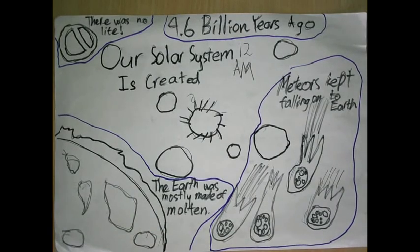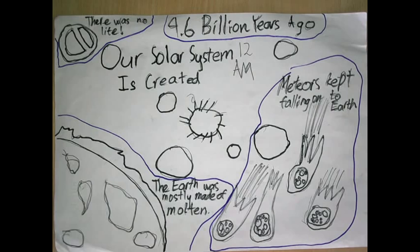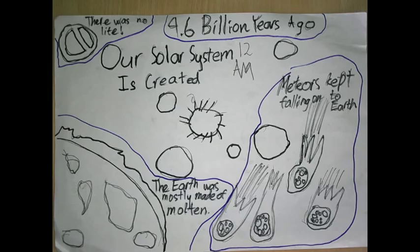4.6 billion years ago, at 12 a.m., our solar system was created. There was no life on Earth. Meteors kept falling on Earth, so Earth was mostly made out of molten.